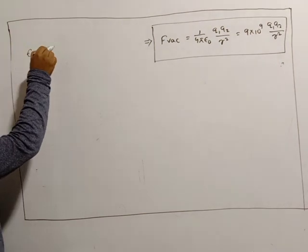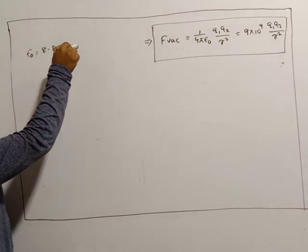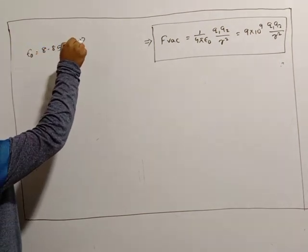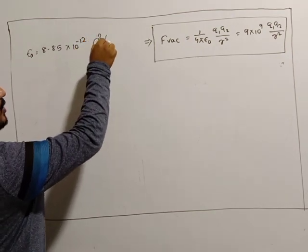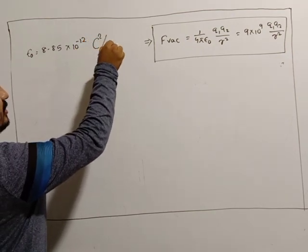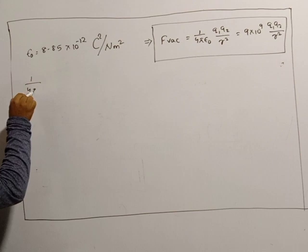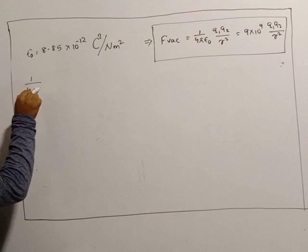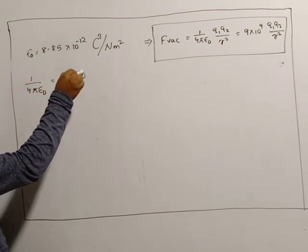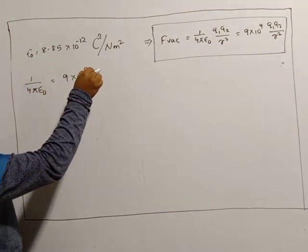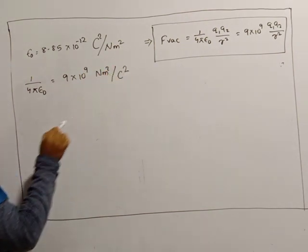ε₀ equals 8.85 × 10⁻¹² coulomb squared per newton meter squared. And 1/(4πε₀) equals 9 × 10⁹ newton meter squared per coulomb squared.